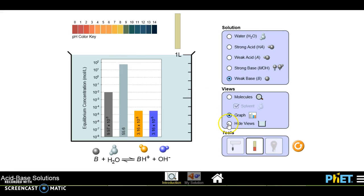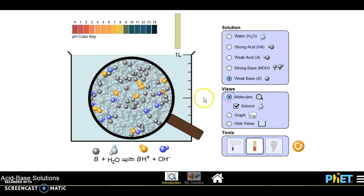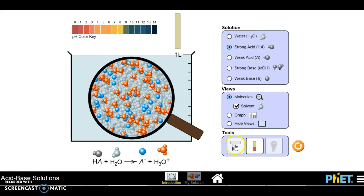You can see the graph, or you can hide the overall view to just see the container. If you want to see how these tools work, tool number one is this pH probe. You can dip the pH probe inside and check what is the pH of a solution.